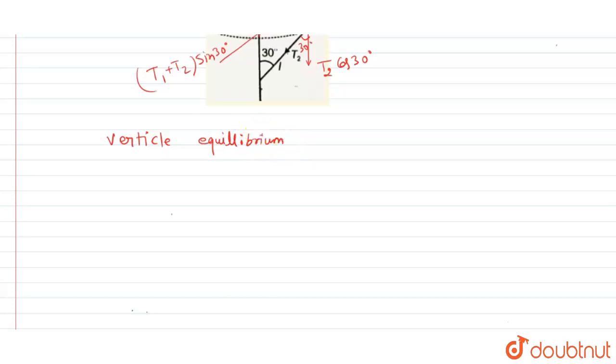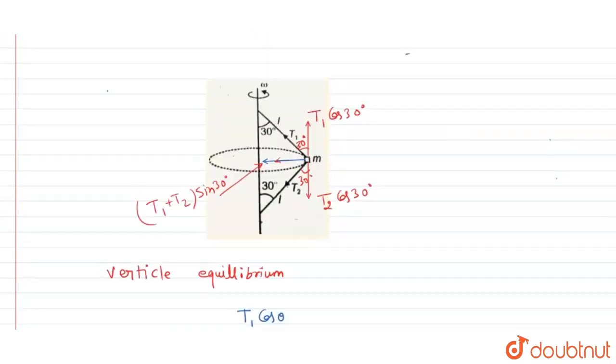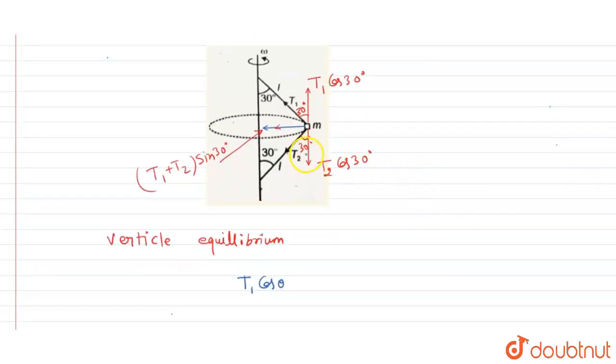So for vertical equilibrium, we can simply write here that T1 cos of theta. Here, one thing I must mention here: in downward direction also mg will act here.